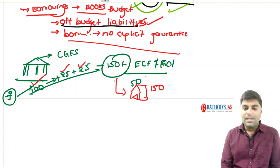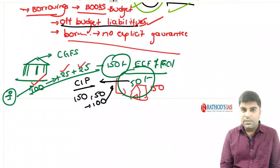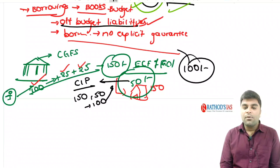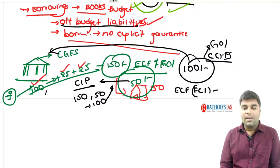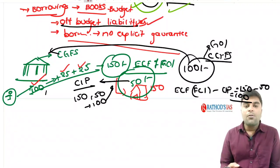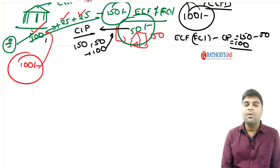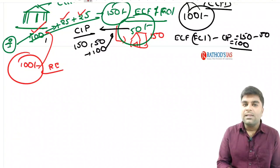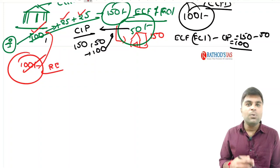The FCI should sell at 150 rupees to state government depots, but instead sells at 50 rupees — which is called the Central Issue Price. The balance of 100 rupees is the loss for FCI, and this 100 rupees is provided to the FCI by the Government of India as Central Government Food Subsidy. The formula is: economic cost of food grains (150) minus Central Issue Price (50) equals 100 rupees.